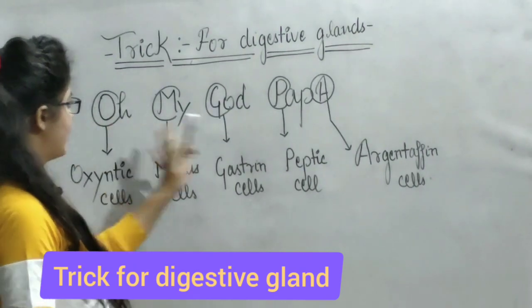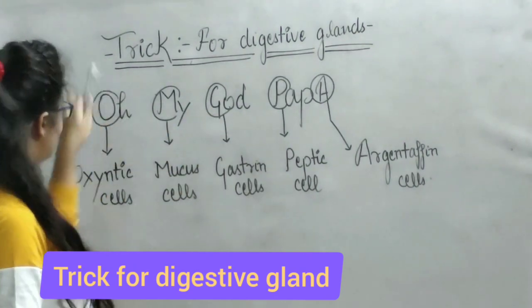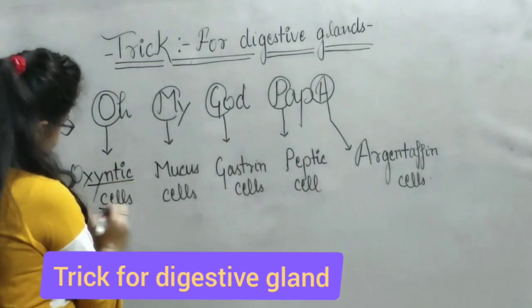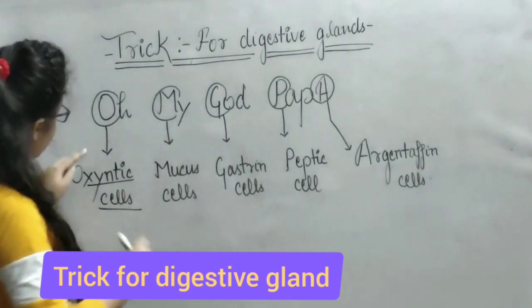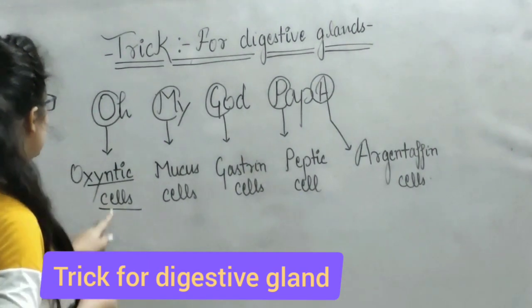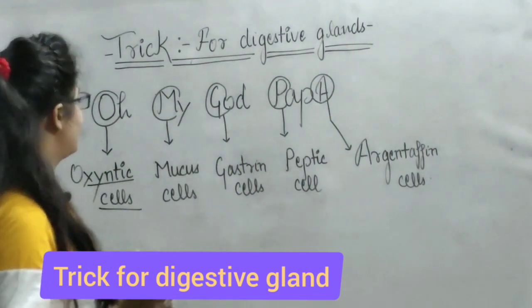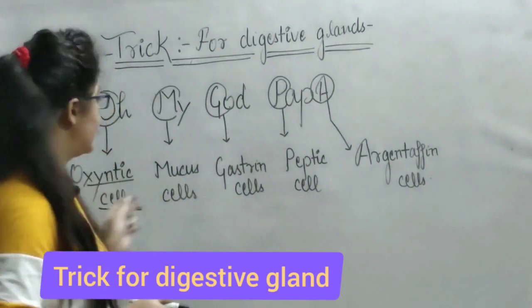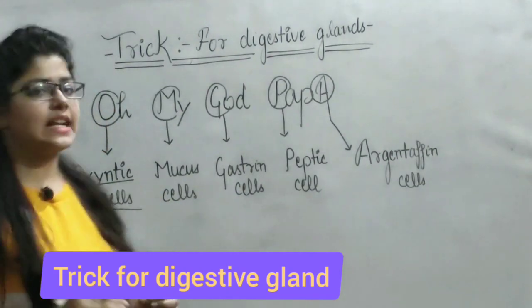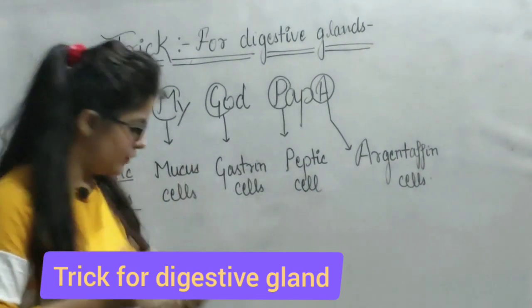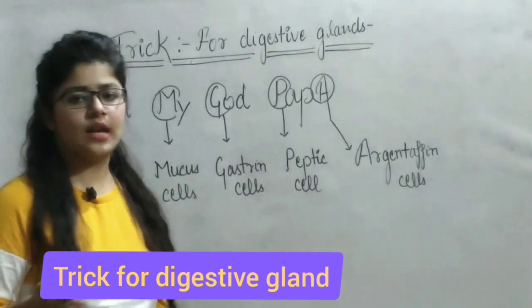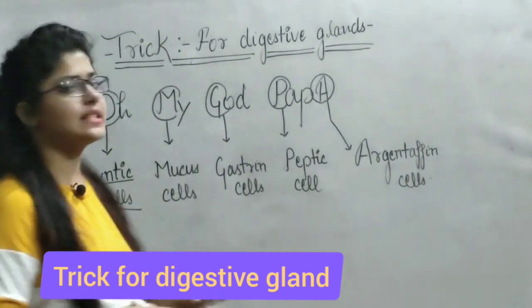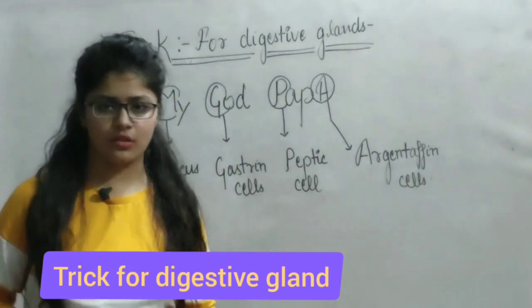Oxyntic cells — these are found in the inner wall, which is called the mucosa. Oxyntic cells are responsible for secretion, which we need to start with.